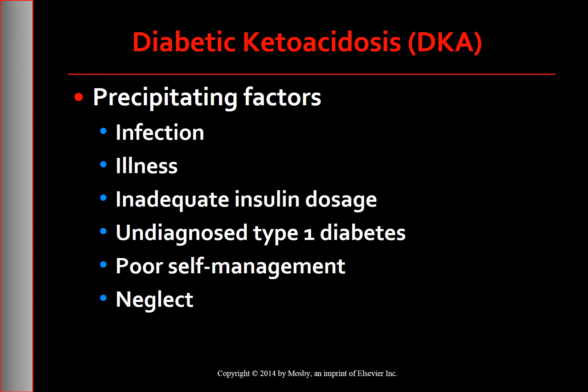The precipitating factors include illness and infection, inadequate insulin dosage, undiagnosed type 1 diabetes, poor self-management, and neglect. Older patients who have secondary problems like infection, stroke, myocardial infarction, pneumonia, and intestinal obstruction have higher mortality rates.